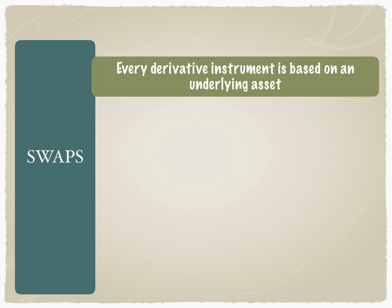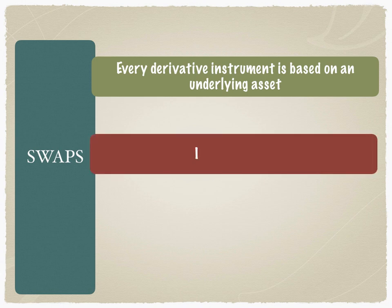What could the underlying asset be? It could be interest rates, and therefore you can have an interest rate swap for exchanging fixed for floating or floating for fixed — a separate video will be made on interest rate swaps. It could also be a currency swap where we're exchanging currencies over a period of time.